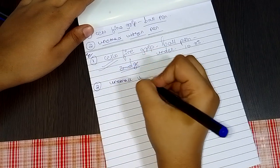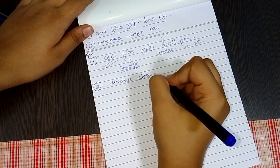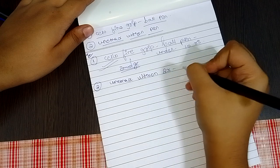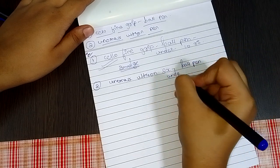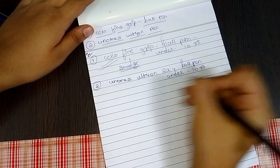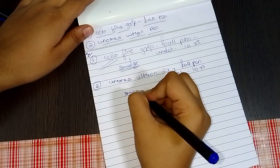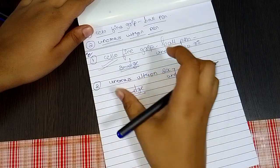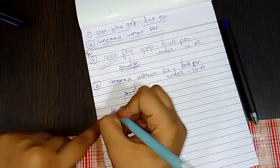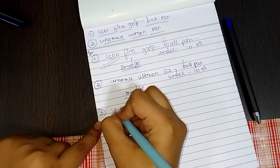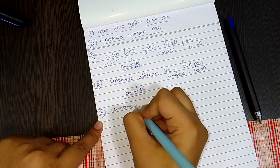Unomax Ultron Neo 2x ball pen under 10 rupees - smudge test. The smudge test results are very nice. I'll also talk about the body and texture.